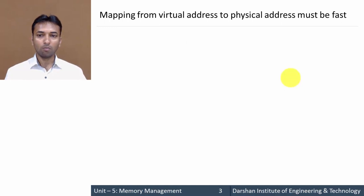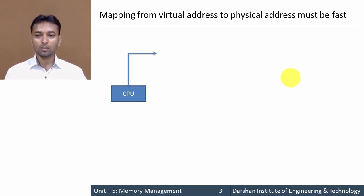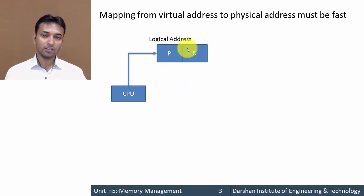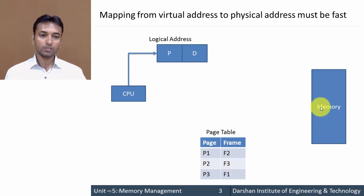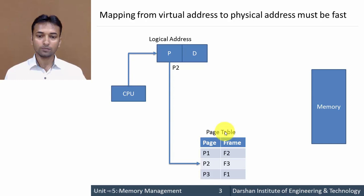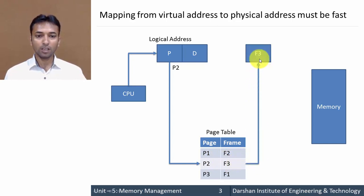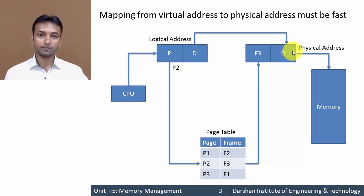The first issue is that mapping from virtual address to physical address must be fast, but it becomes slow in paging. Suppose the CPU generates a logical address divided into two parts: an index to the page table and an offset. The page table has indices p1, p2, p3, each associated with a frame. If the index is p2, it finds frame f3 in the page table, and by combining f3 plus the offset we get the physical address.